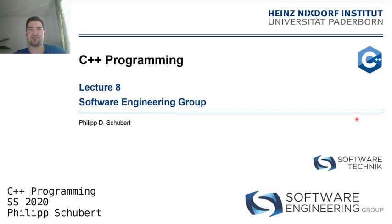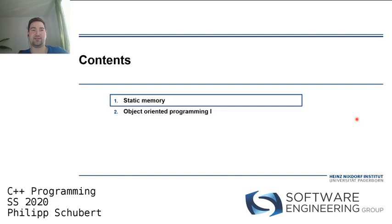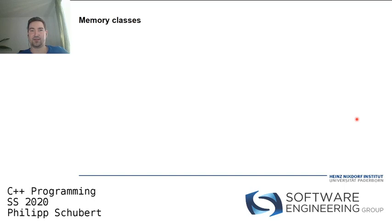Welcome back to our ninth C++ programming lecture. Today we're going to discuss static memory once and for all — after this lecture you'll know all the uses of the static keyword and what that means in terms of memory. We'll also start our introduction to object-oriented programming, part one, and continue with part two in the next lecture.